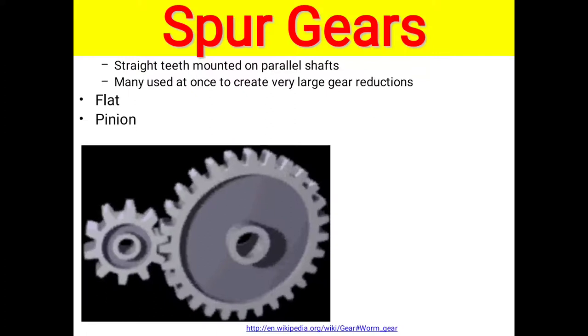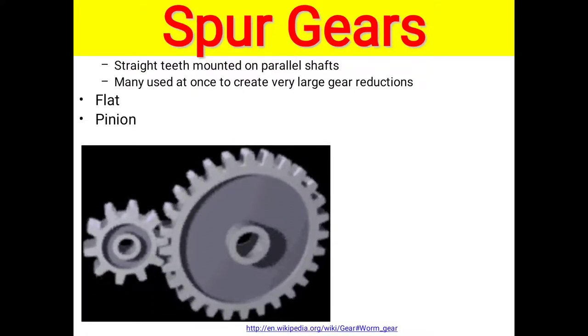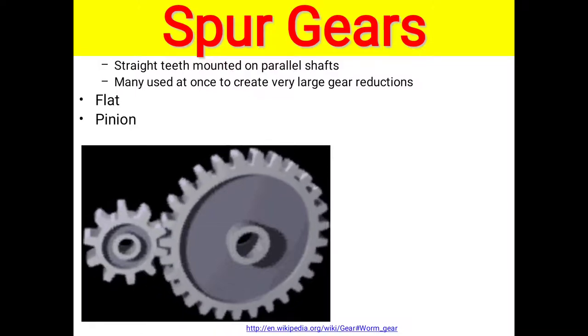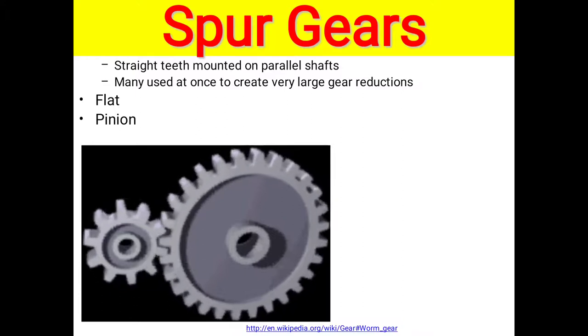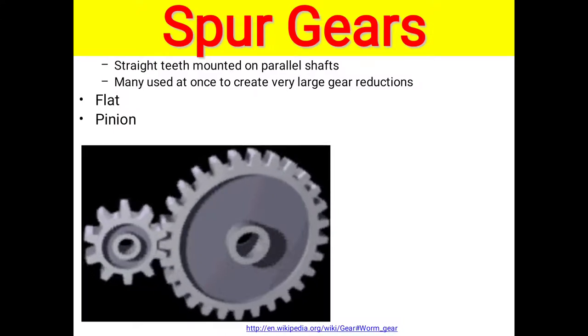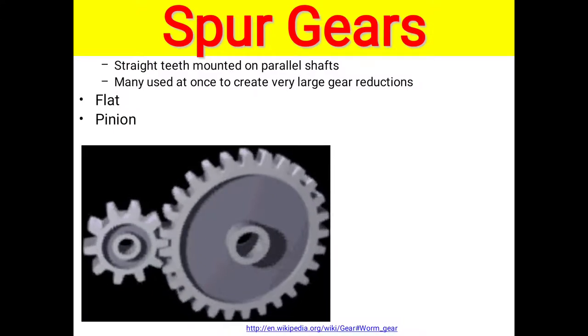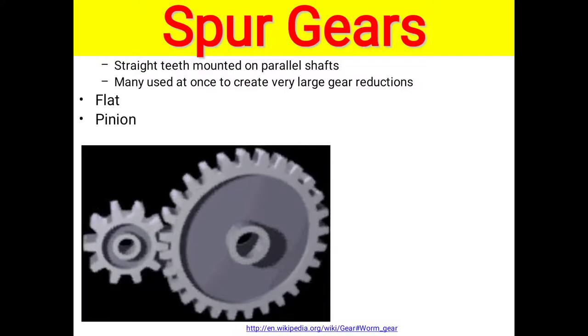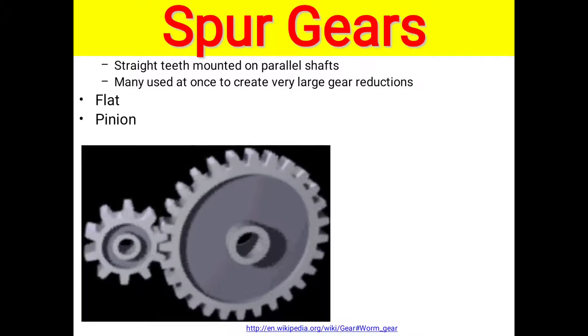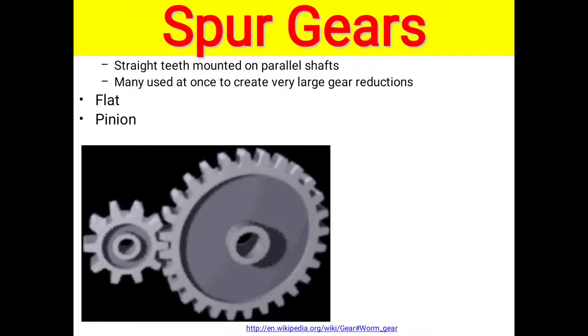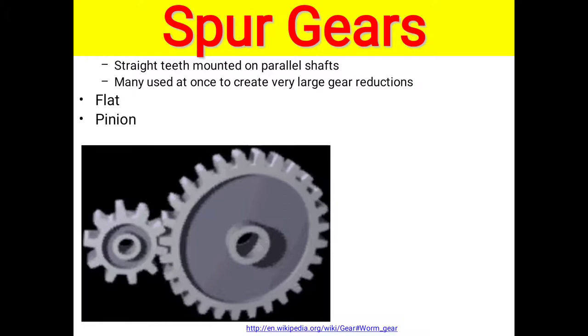This is the spur gear, one type of gear. Here are two wheels: first is a big wheel and second is a small wheel. These two wheels are used to transmit power from one gear to another in increasing or decreasing manner, depending on the number of teeth and diameter. Spur gears have straight teeth mounted on parallel shafts, many used at once to create very large gear reductions. Types include flat and pinion.